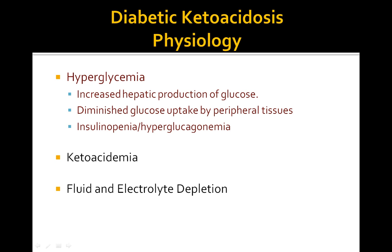Diabetic ketoacidosis mainly precipitates because of an insulin deficiency. There are three key things about the physiology: hyperglycemia due to increased hepatic production of glucose, diminished glucose uptake by the peripheral tissues, and insulinopenia and hyperglucagonemia — both of which in combination lead to hyperglycemia.